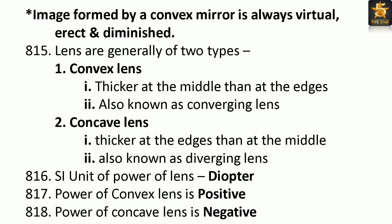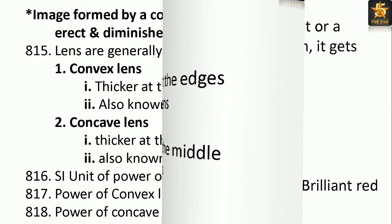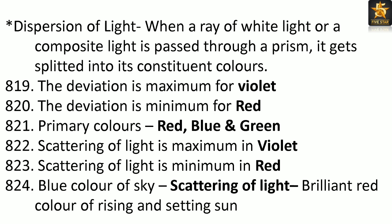Dispersion of light: When a ray of white or composite light is passed through a prism, it gets split into its constituent colors. The deviation is maximum for violet and minimum for red. Primary colors: red, blue, and green. Scattering of light is maximum for violet and minimum for red. The blue color of the sky and the brilliant red color of the rising and setting sun are due to scattering of light.